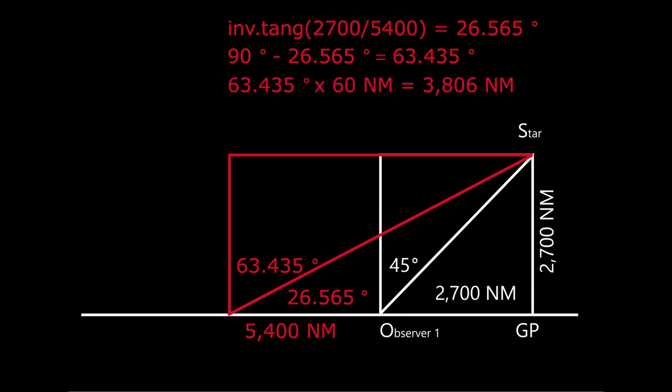Using the 60 nautical miles per degree, the calculated distance to the GP would be 3806 nautical miles. However, we are at 5400 nautical miles from the GP. This means that you cannot use the 60 nautical miles per degree in navigating with a sextant on a flat earth.